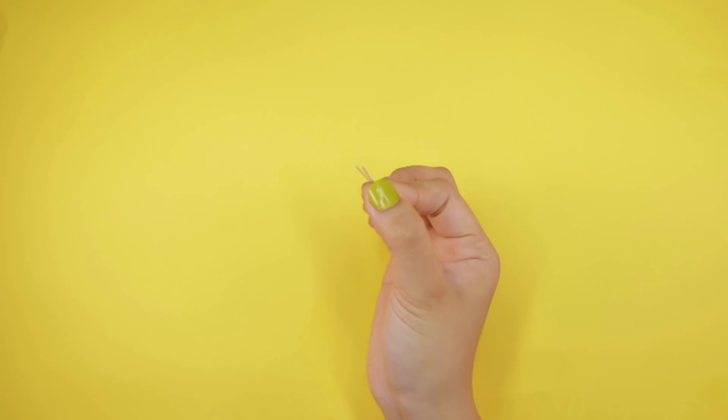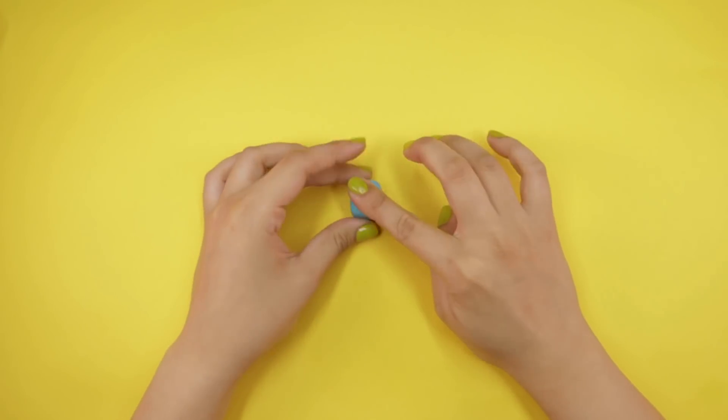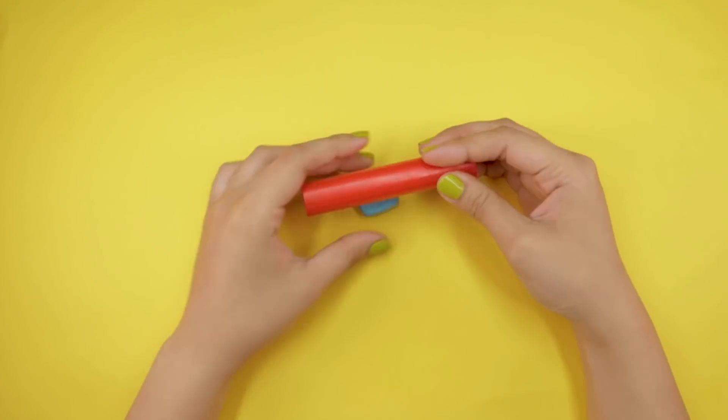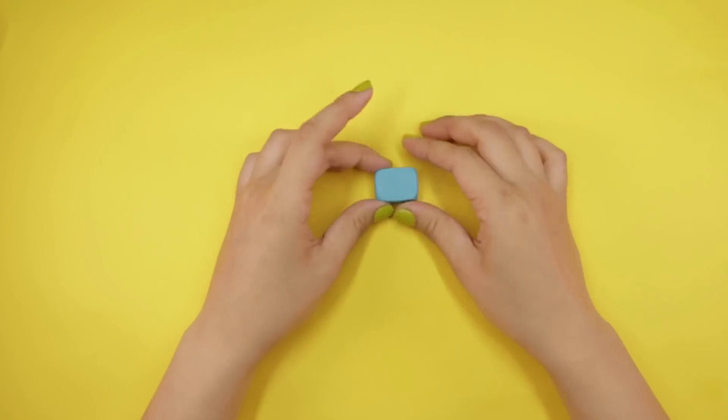How do we make our own tin toy robot? We'll start by taking our blue clay and molding it into a square. Once squared, use the rolling pin to make the sides clean and flat. This first square will be the main body of our robot.